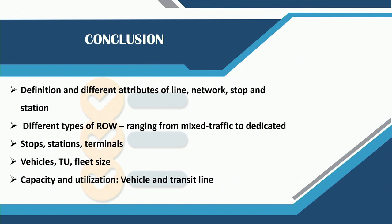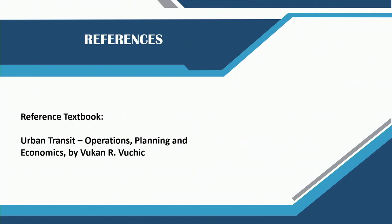In conclusion, we looked at different types of lines, networks, stops, and stations; made distinctions between the different types of right of ways; looked at the difference between stops and stations, and between terminal and transfer stations; looked at the basic unit of transit — the transit unit TU — fleet size, different vehicle types, and finally capacity and utilization. I would like to refer you to the textbook Urban Transit Operations Planning and Economics by Vukan Vuchic, which will be the primary textbook used for all lectures on public transportation. Thank you.